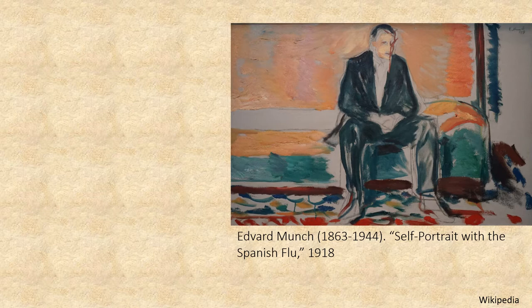Edvard Munch contracted the flu in 1918 — almost a hundred years ago. Let's remember what happened in 1918. All of a sudden there's this infectious disease. It was a flu, but it was killing people right and left. Everybody was falling ill, nobody knew what to do, there was no treatment, there was not enough medical care. They were in the middle of the Great War — it was not called the First World War until the Second World War happened. Everybody was concerned about not having a sufficient support system in society to help people.